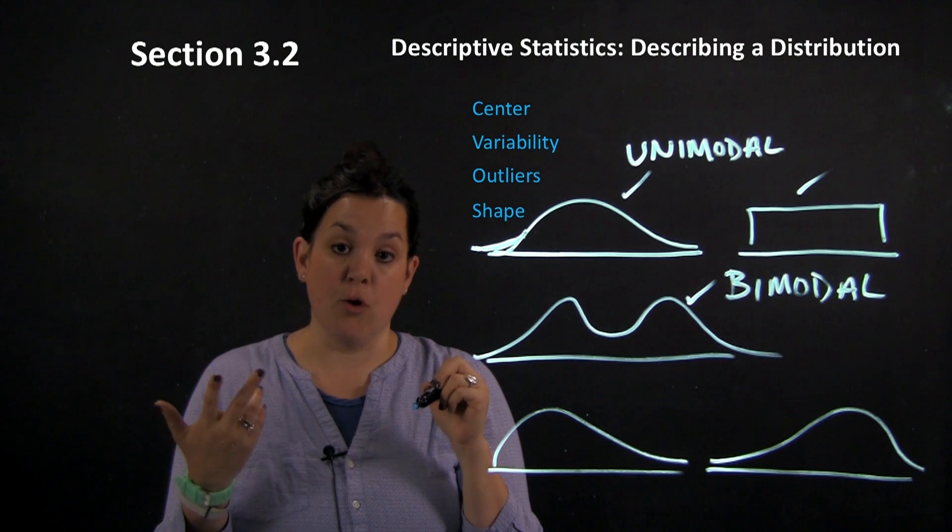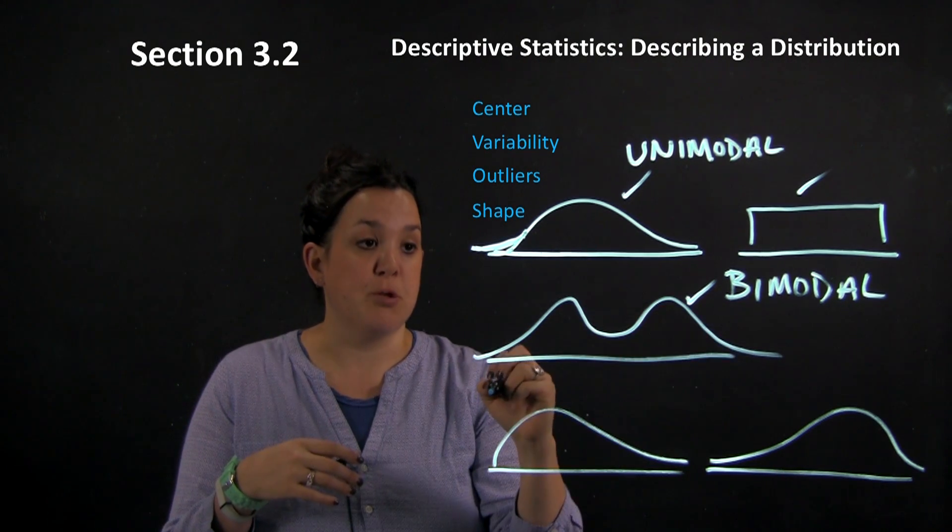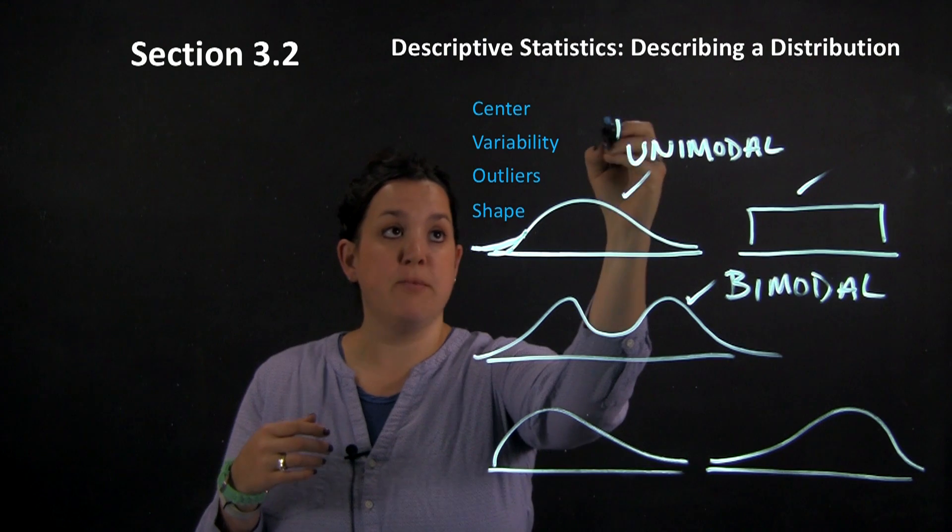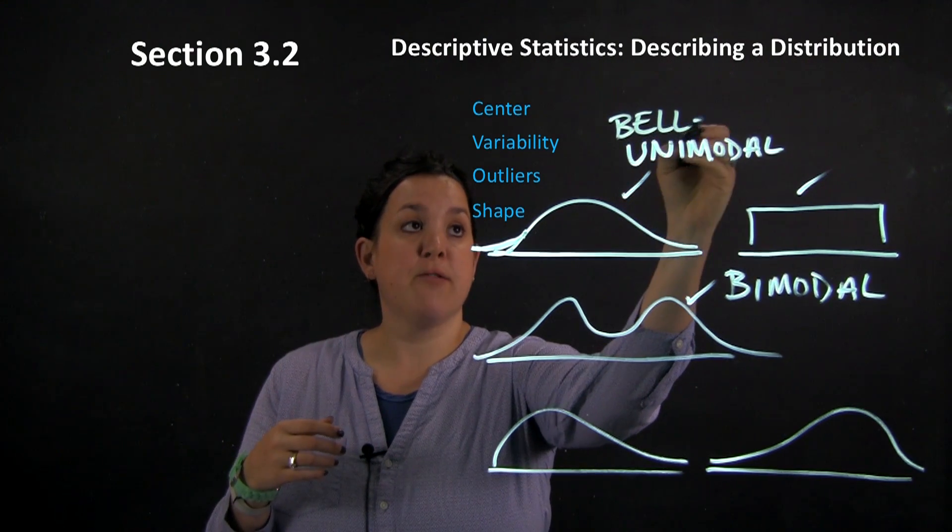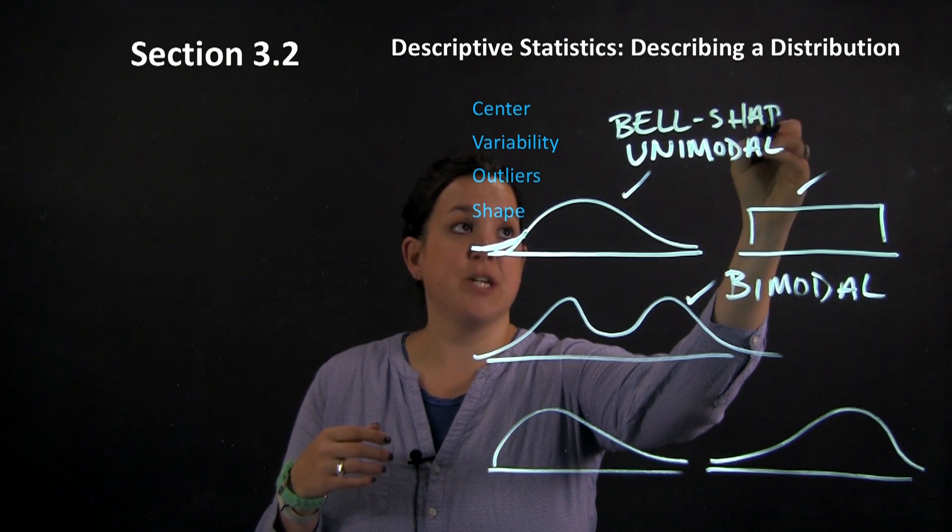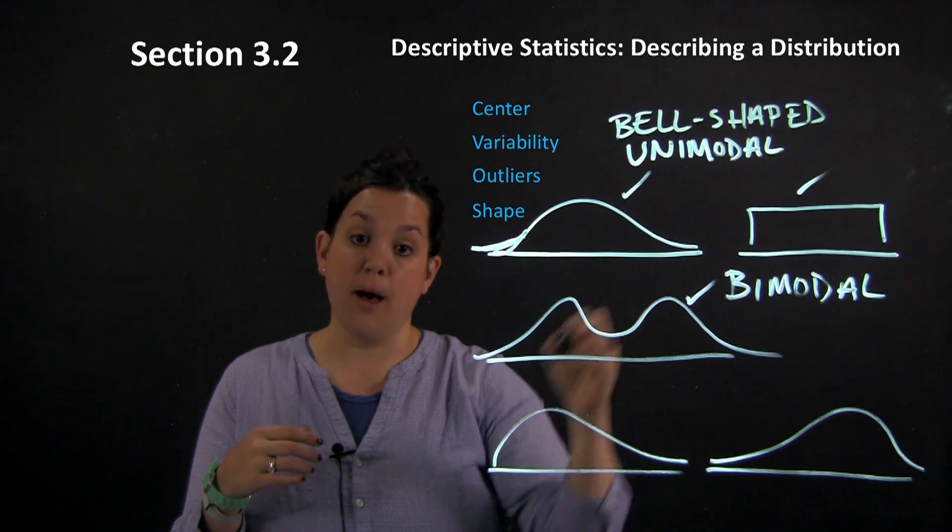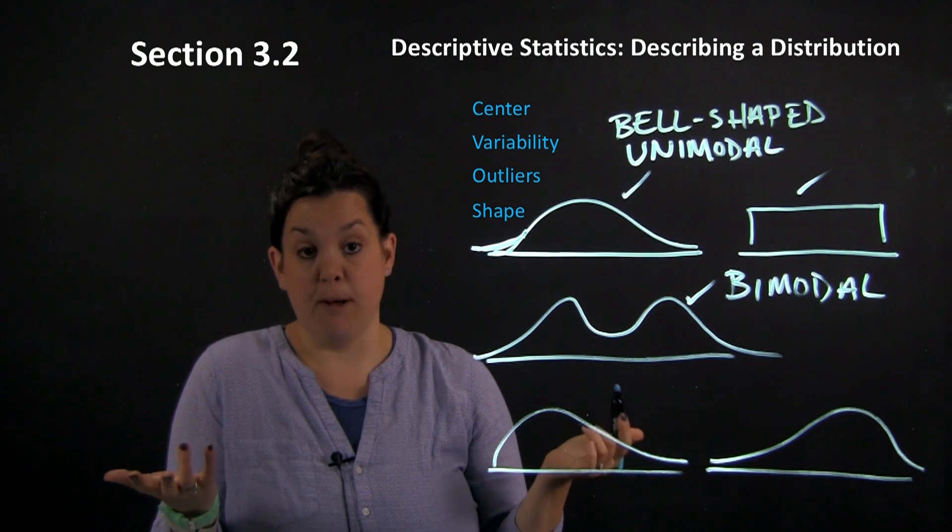So all three of these that have the check marks are symmetric, and this is unimodal and this would be bimodal. So one peak is going to be unimodal, two peaks would be bimodal. This one also is sometimes described as being bell-shaped for the obvious reasons—it has a shape of a bell. If you see that, you can kind of see that bell like you would see a normal bell in everyday life.